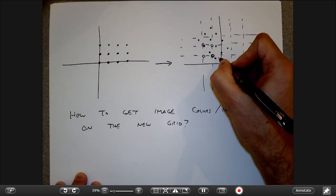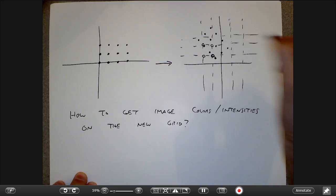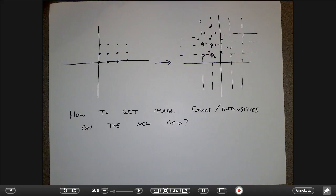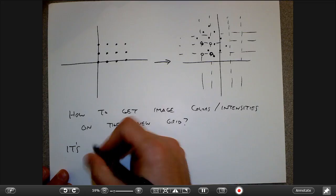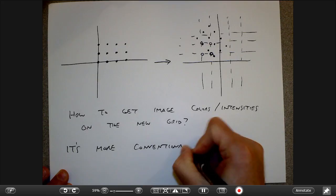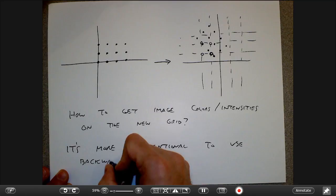A naive approach is nearest-neighbor interpolation: for each required pixel location, find the nearest known pixel and take its color. This works somewhat, but if the known pixels are far away, you'll have a large error. A better approach is backwards mapping — instead of pushing pixels forward, apply the inverse transformation to map each output grid point back into the original image.